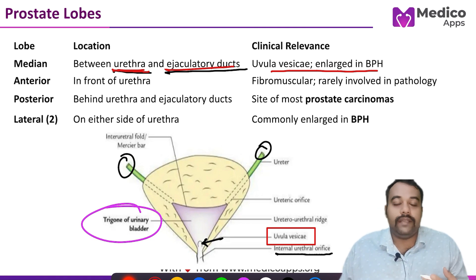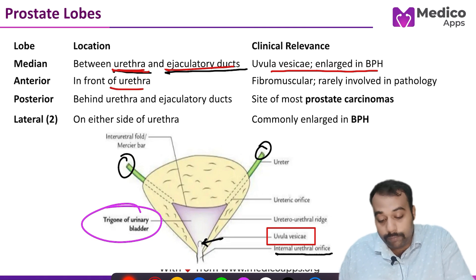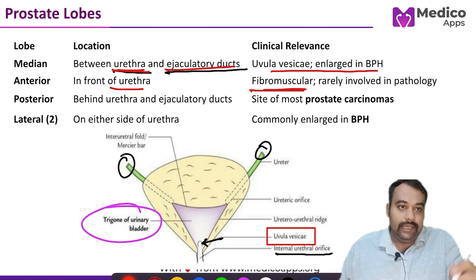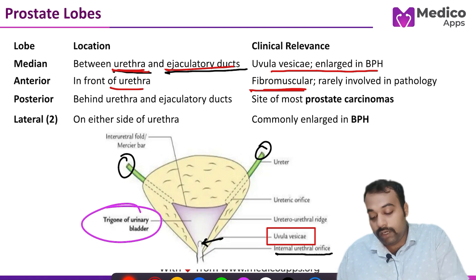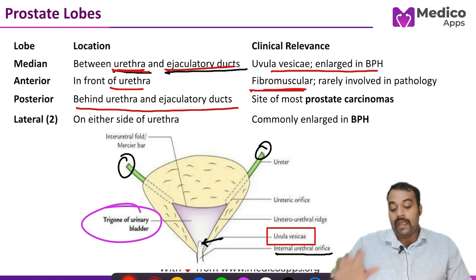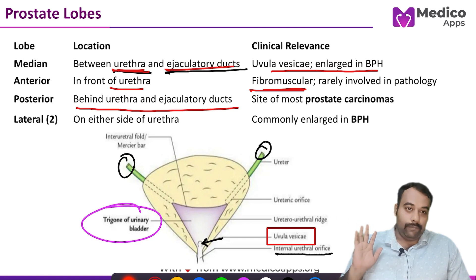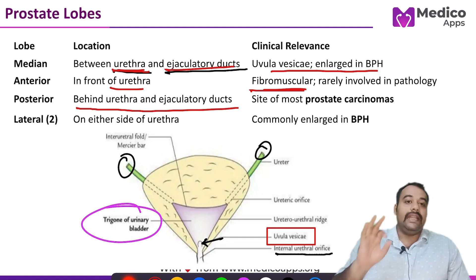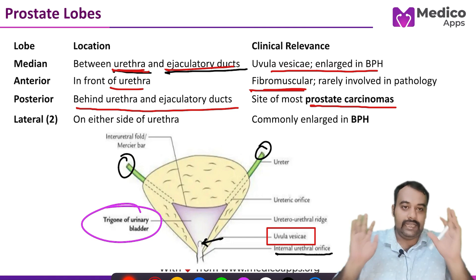The anterior lobe of the prostate is situated just in front of the urethra and is fibromuscular in nature, so rarely any pathology involves the anterior part. The posterior lobe stays behind the urethra and the ejaculatory ducts, and is the most common part involved in prostate carcinoma.